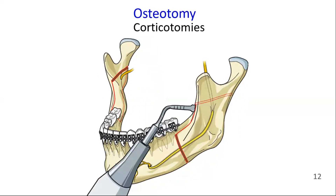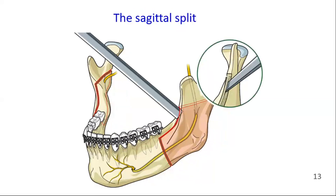The third corticotomy connects the first two lines along the inferior border of the ascending ramus. This is the marking of the first line, this is the second one, and the third connects the first two. The final split is completed with a thin osteotome splitting the entire ascending ramus from anterior to the posterior border of the ramus.